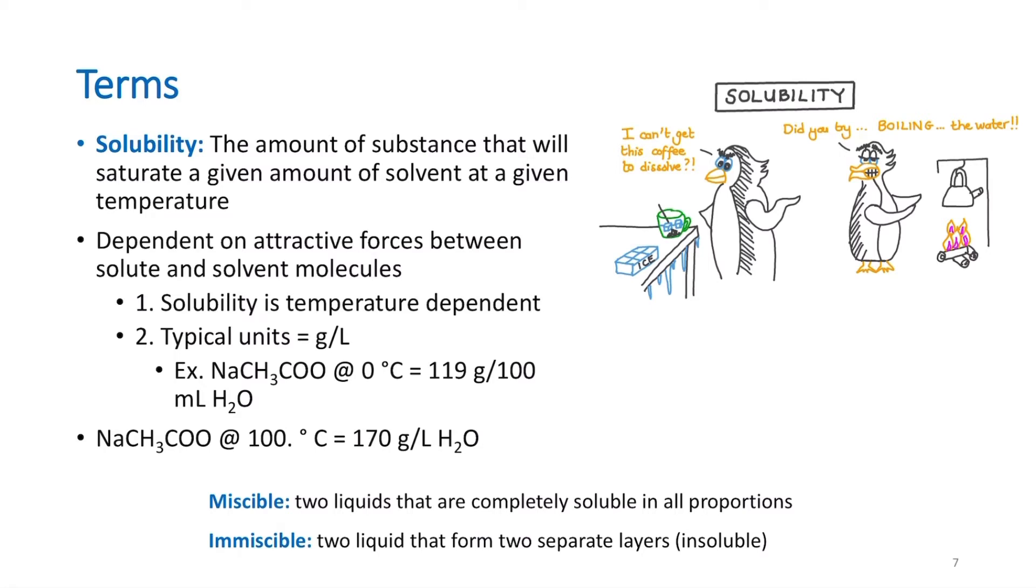We also have two terms here that we need to understand, miscible and immiscible. Miscible is two liquids that are completely soluble in all proportions, meaning they will mix in any ratio. Water and ethanol are like this. Ethanol is an alcohol. It's actually what's put into alcohol that we drink as humans. And these can be mixed in any proportion, meaning I can have anywhere from 0.1 milliliters. If I have a 100 ml solution, I can have as little as 0.1% ethanol and 99.9% water all the way to 99.9% ethanol with only 0.1% water. It can mix in any ratio. Immiscible is two liquids that are going to form separate layers or look and appear to be insoluble, such as water and oil.